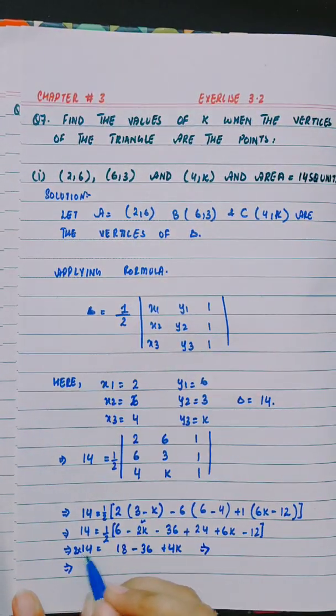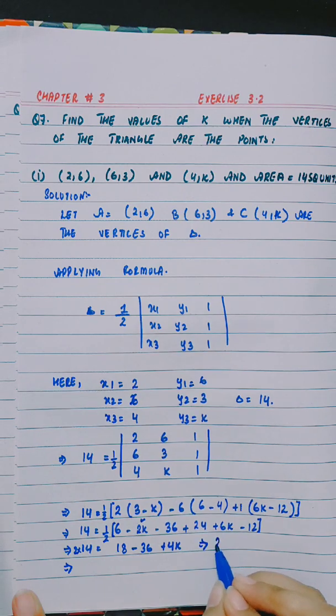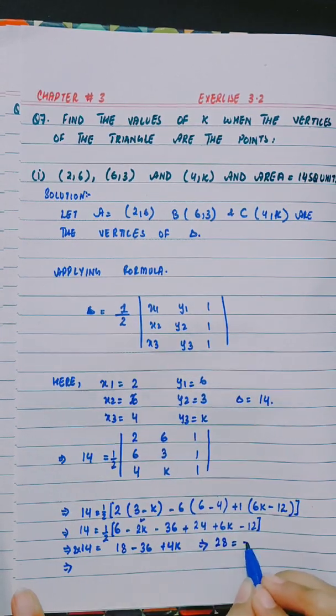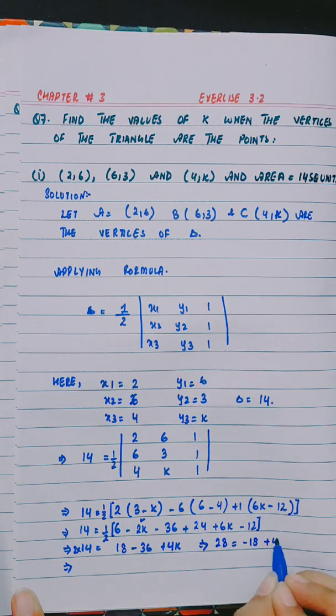Here will be the value: 2 into 14 is 28, and 6 minus 36 is minus 18 plus 4k.